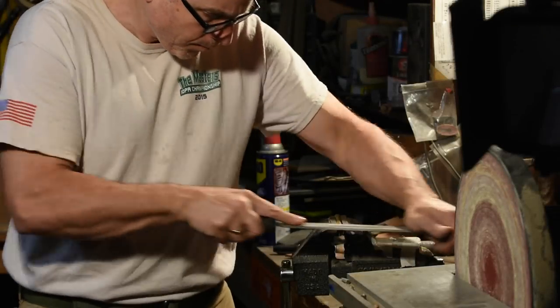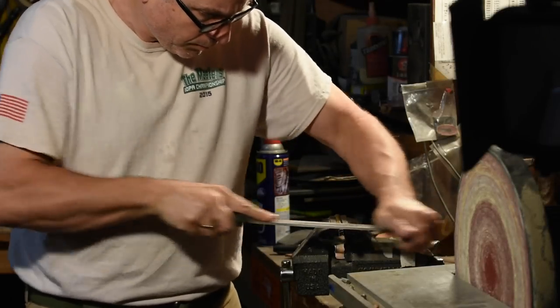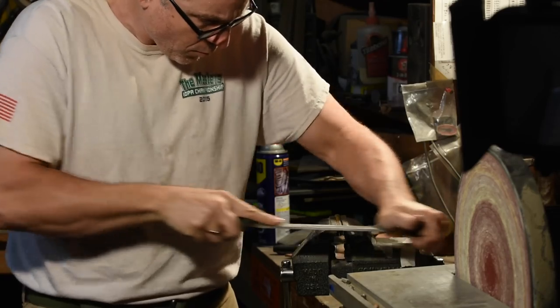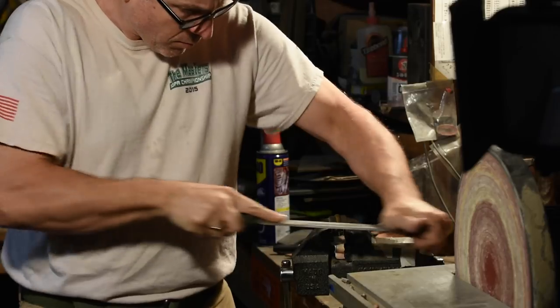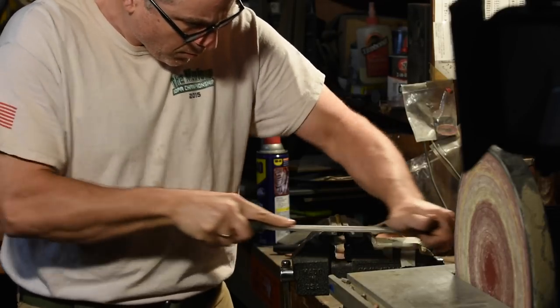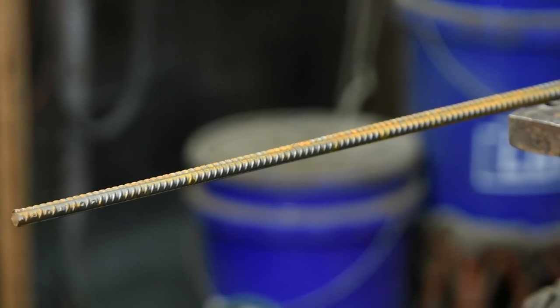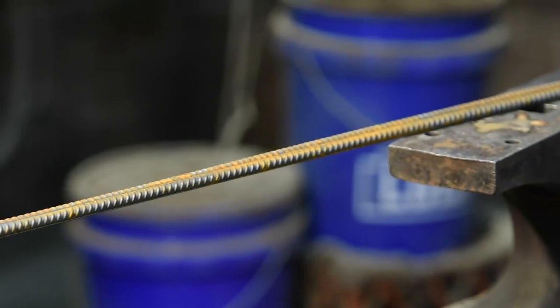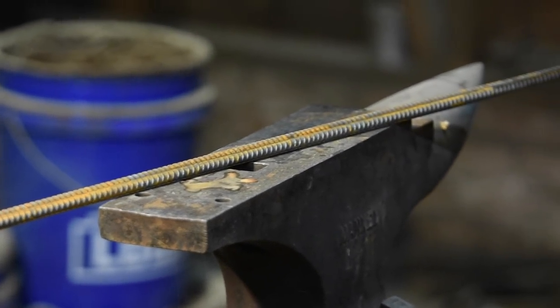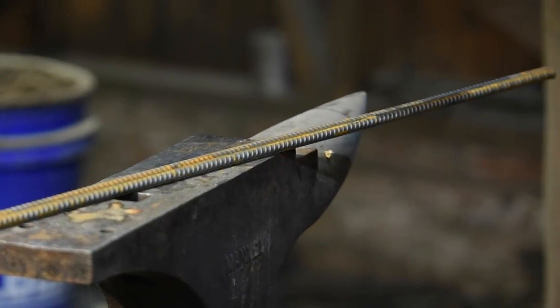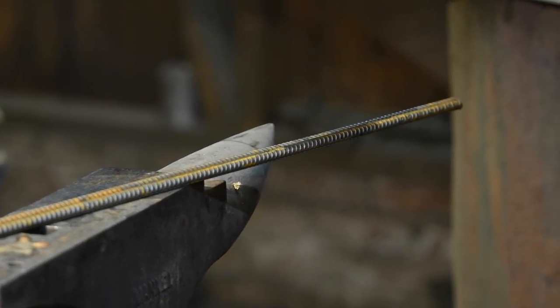Today we'll be doing about as dead simple a project as it's possible to do in the blade making world. These types of shuriken are sometimes referred to as bow shuriken or throwing darts. They're basically like big, huge nails. The materials used will be one piece of 3⅛ inch rebar and nothing. That's it.